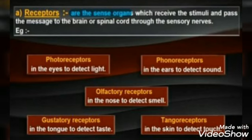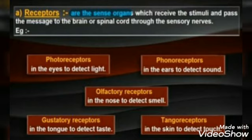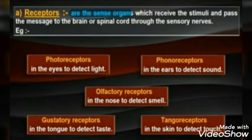Now, before studying about the nervous system in vertebrates, we need to study about how higher organisms receive external information. The higher organisms receive external information in the form of stimuli. Stimuli is any change in the environment to which an organism responds or reacts. These stimuli are collected through specialized structures called receptors, which are generally present in all the sense organs in our body.